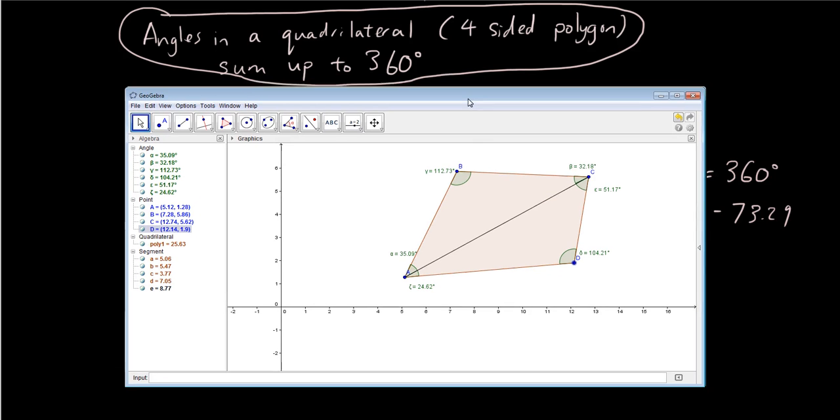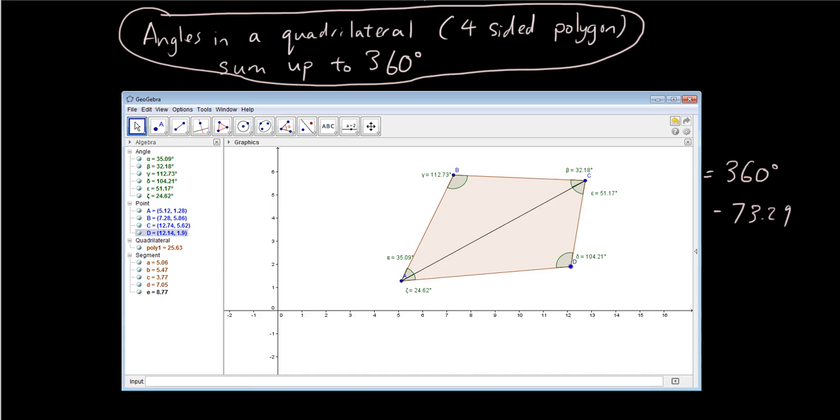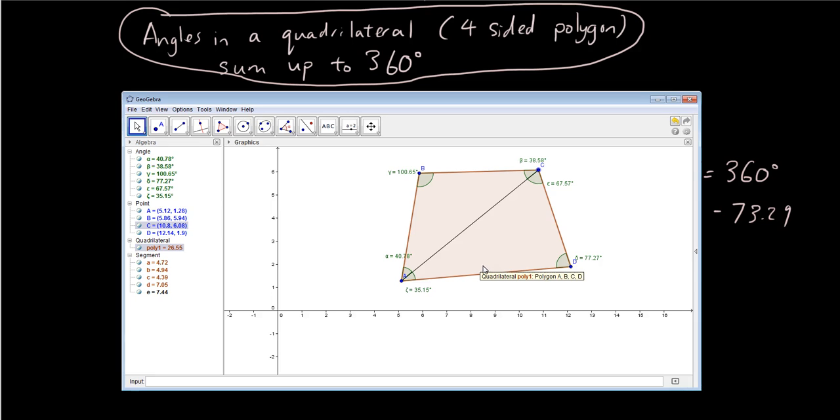So the reason why in a quadrilateral we have angles add up to 360 is because a quadrilateral is made up of two triangles.